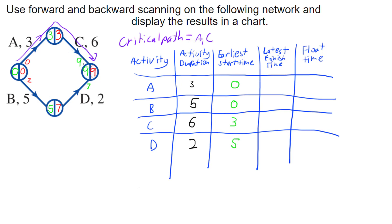The latest finish times come from the backward scanning — specifically the node to the right of each arc. The latest I can finish A is at minute three. The latest I can finish B is minute seven, because we had two minutes spare and can delay B — I can start at minute zero but finish as late as minute seven, even though B only takes five minutes. C must finish at minute nine, and D must also finish at minute nine, as both must be done by the end of the project.